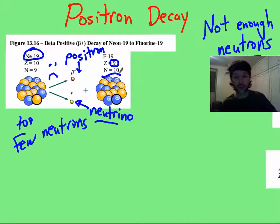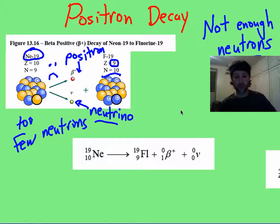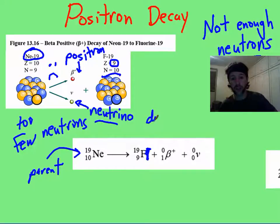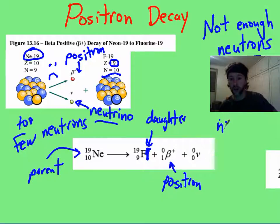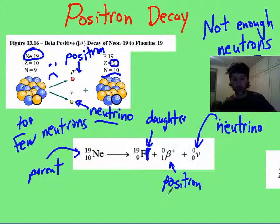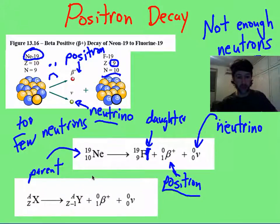And the way this would look in equation form is this here, where here we've got our parent. Fluorine, sorry, it's just F, is the daughter. This is our positron. And here is our very light and doesn't like to react with matter neutrino here. And this positron is, what's cool is it's anti-matter. If it met up with another electron, they would have a very brief and catastrophic love affair, where they destroy each other and give off a lot of energy. The very generic equation that you can see for this reaction is this here.